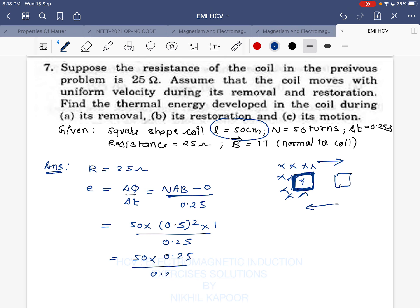So E would be equal to 50 volts. Now heat produced is given by E squared by R into T. During removal, the heat produced will be E squared by R into T. E squared will be 50 into 50, time is 0.25, divided by R which is 25. This equals 25 joules.